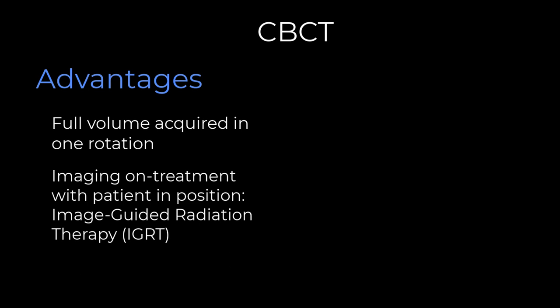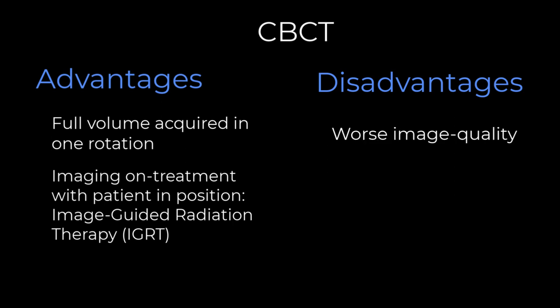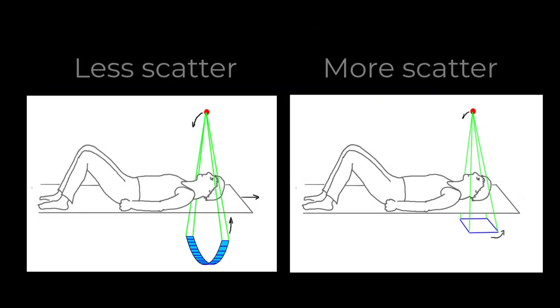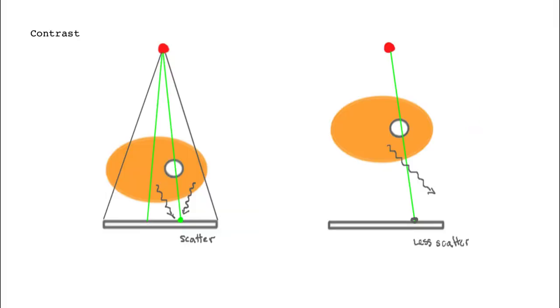There are some disadvantages to cone beam versus fan beam geometry. The main issue is that image quality is substantially worse, and that's due in large part to scatter. In the fan beam, there's relatively less scatter because the beam is narrow and less volume of tissue is irradiated. But in the cone beam, there's a large volume being irradiated and much more scatter.